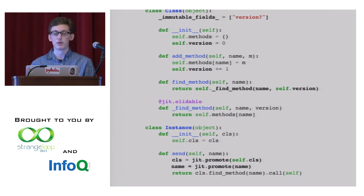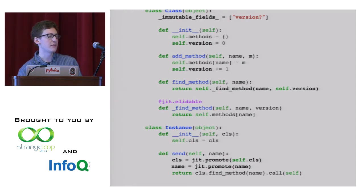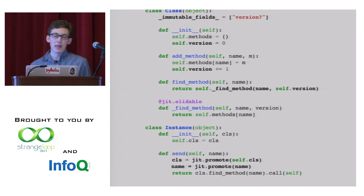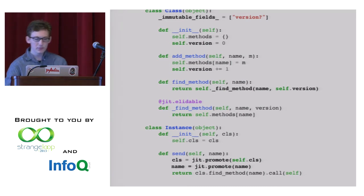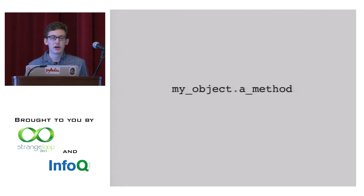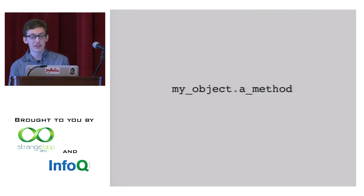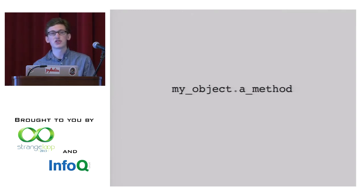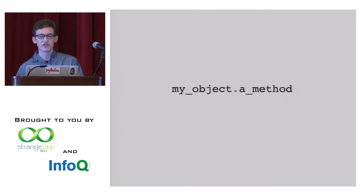Now we have a couple of primitives and we need to put them all together to build a system — no single one of these is enough to implement a fast dynamic language. Here is the optimized version — it all fits on one slide. Method lookups become totally free, basically no assembly instructions. What did we change? We added a version field that starts at zero and is quasi-immutable. We added an indirection over find_method. Now find_method calls _find_method with its version, and _find_method is now elitable. And send does promotion on its class and on the name.